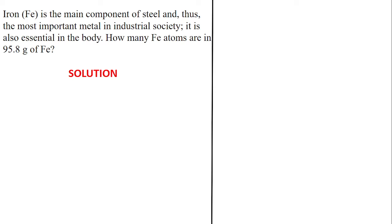The next question: iron, represented by Fe, is the main component of steel and the most important metal in industrial society. It is also essential in the body. How many Fe atoms are in 95.8 grams of Fe? Iron is a very important atom — you can talk about hemoglobin and many important things in our body.